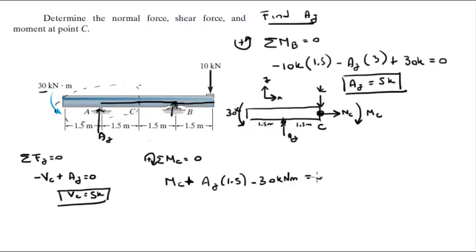So when you solve for MC, you get that MC is 22.5 kilonewton meters and it's positive, so it's going clockwise because we assumed that clockwise was positive.